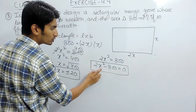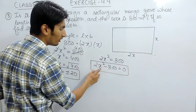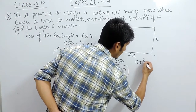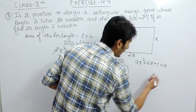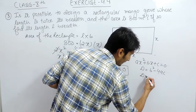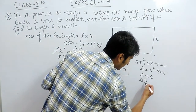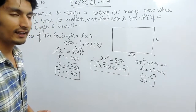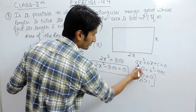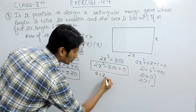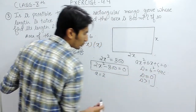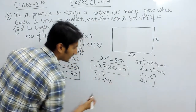You have to check whether the roots of this equation are real or not, meaning whether the value of x is real. For a standard quadratic equation ax² + bx + c = 0, we find the discriminant D = b² − 4ac. Comparing: the coefficient of x², which is a, equals 2; the coefficient of x, which is b, is 0 since there is no x term; and the constant c is −800.